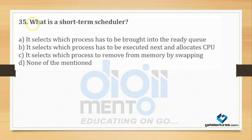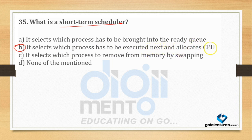Question number 35: Is simple definition puchhi hai — short term scheduler ki definition kya hai? To pata hai ki short term scheduler ki definition hai B: It selects which process has to be executed next and allocates CPU.